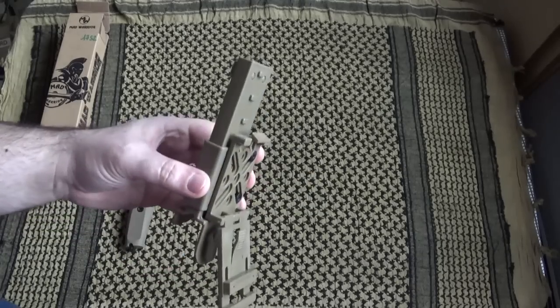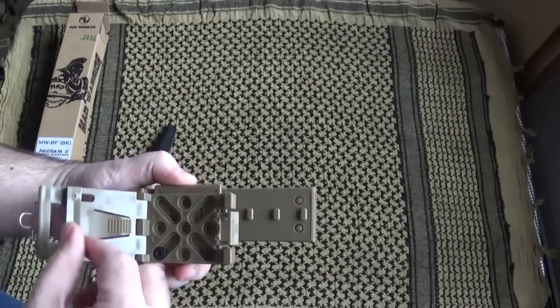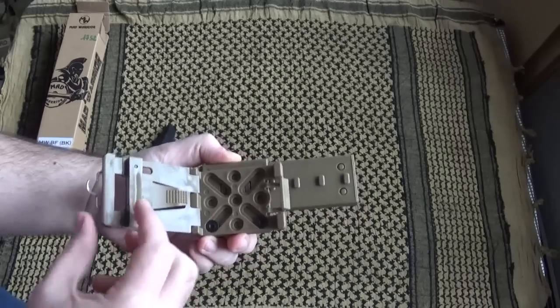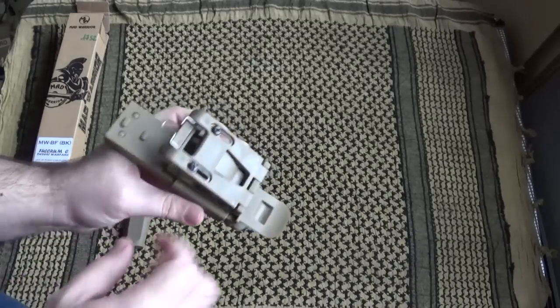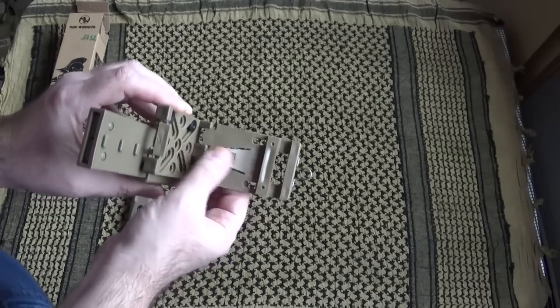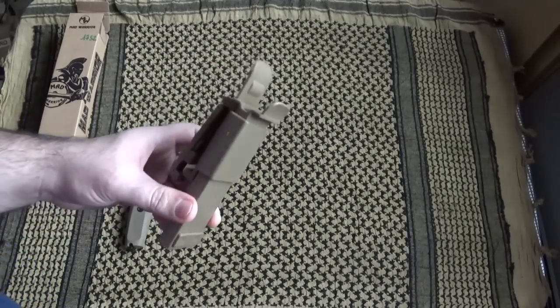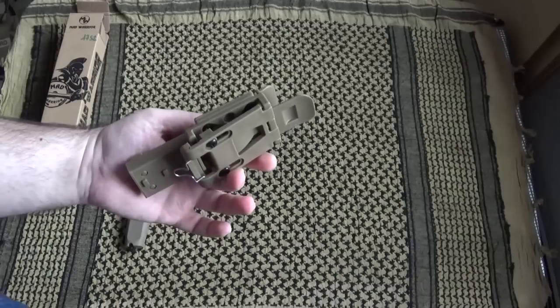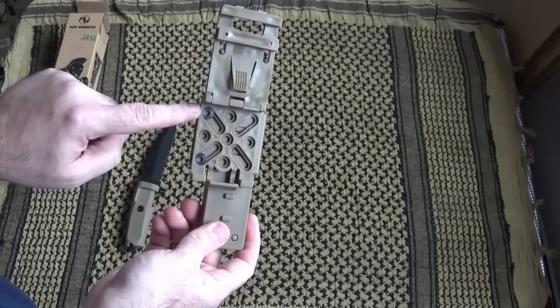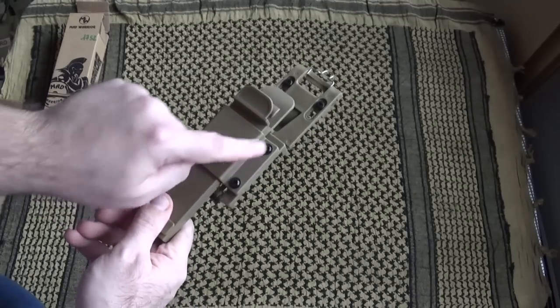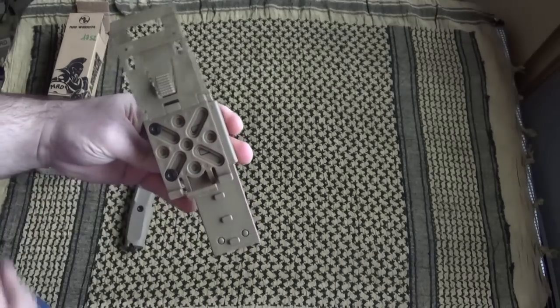You have here two screws that allow you to adjust this small bar, which allows you to adjust the thickness of your belt, the height exactly. You have here a small retention tab that prevents the sheath from moving along your belt, so it allows you to firmly secure the sheath with the belt. You also have a system here with these two screws that you can unscrew - this allows you to adjust the inclination of the sheath relative to your belt.